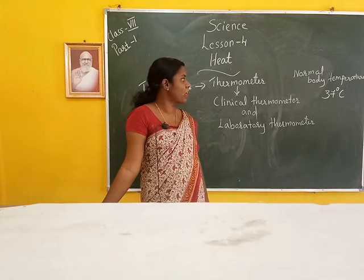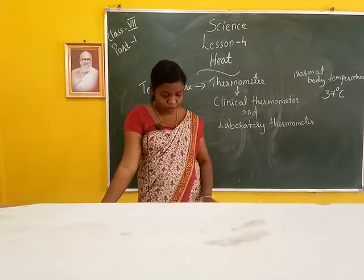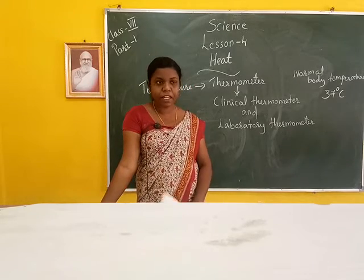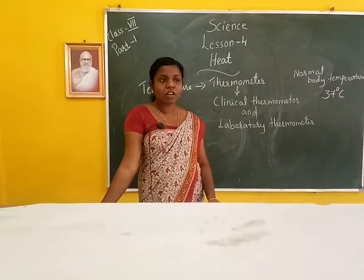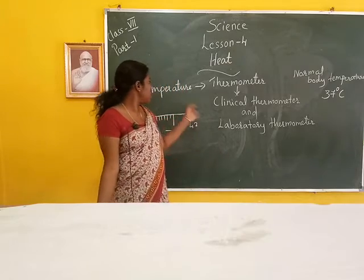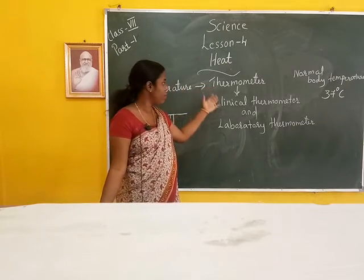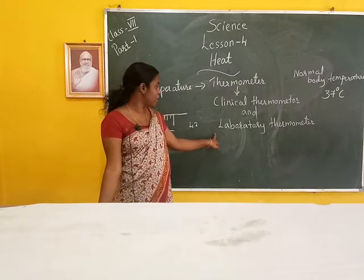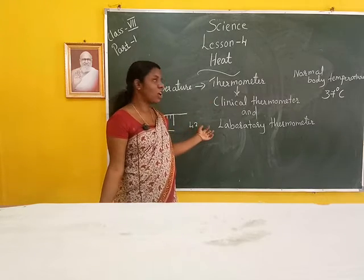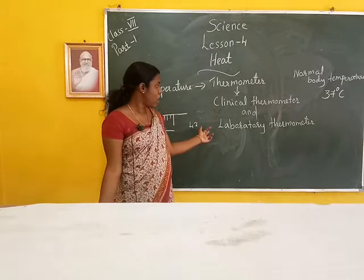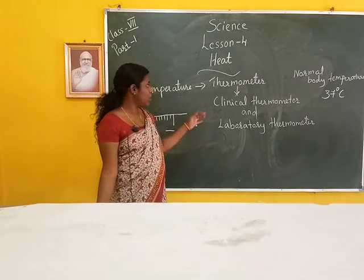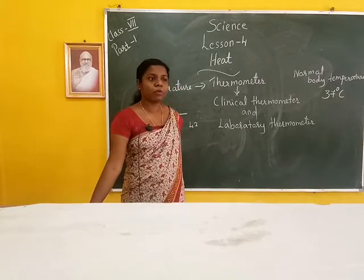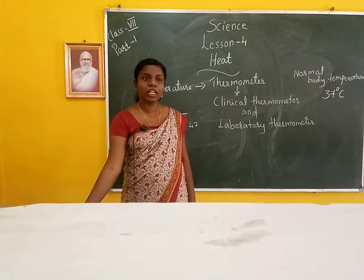The normal body temperature is 37 degrees Celsius. To summarize: temperature means the hotness or coldness of an object, and the device used to measure temperature is called a thermometer. There are two types of thermometers — clinical thermometer and laboratory thermometer. The clinical thermometer has a range of 35 to 42 degrees Celsius, and normal body temperature is 37 degrees Celsius.